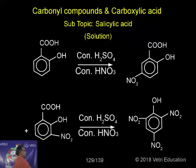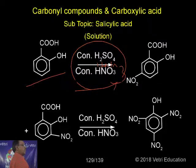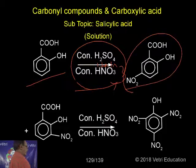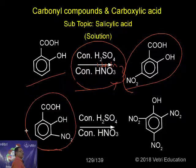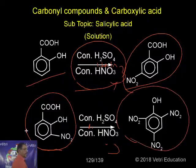That is, the picric acid. Just see — this is the salicylic acid; we are treating with concentrated sulfuric acid and concentrated nitric acid. So we are getting a mixture of two products: para-nitrophenol and ortho-nitrophenol with respect to the OH group — both are obtained. Further, the sulfuric acid and nitric acid, acting as nitrating acid, further nitrates, now producing picric acid.